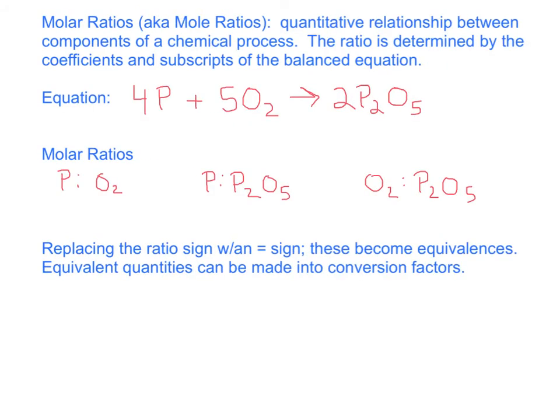Here's an actual problem. We have molar ratios, also known as mole ratios. These are quantitative relationships between components of a chemical process. The ratio is determined by the coefficients of the balanced equation. We have phosphorus with oxygen reacting to form diphosphorus pentoxide. Between phosphorus and oxygen, the ratio would be 4 to 5. For phosphorus to diphosphorus pentoxide, it's 4 to 2. For oxygen to P2O5, it's 5 to 2.